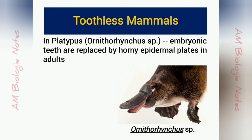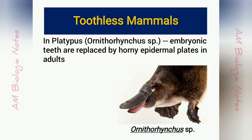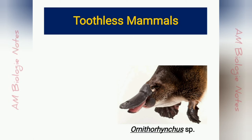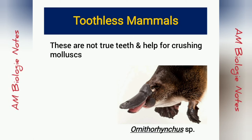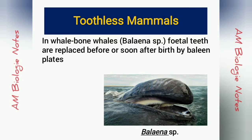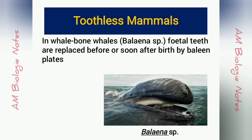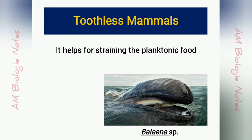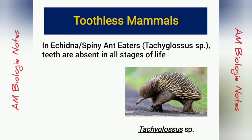Teeth are present in all mammals, though a secondary toothless condition or complete absence of teeth can be seen in some mammals. In platypus, the embryonic teeth are replaced by horny epidermal plates in the adult. These are not true teeth and help for crushing mollusks. In baleen whales, fetal teeth are replaced before or soon after birth by baleen plates, which help for straining planktonic food. In echidna or spiny anteaters, teeth are absent in all stages of life.